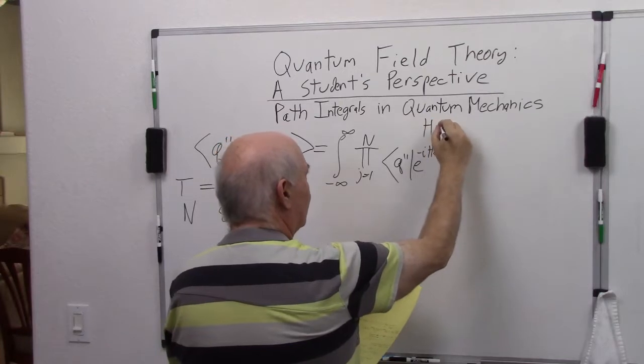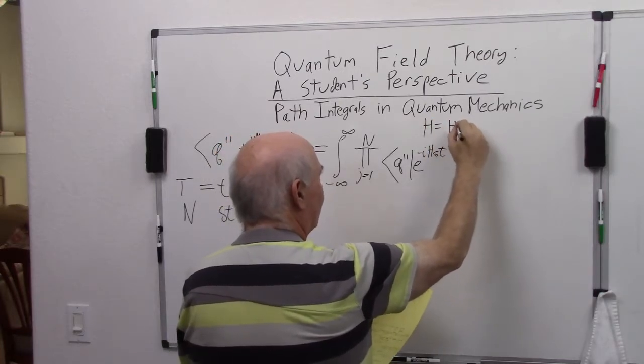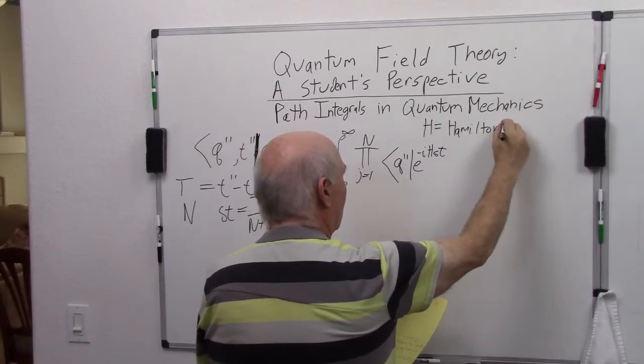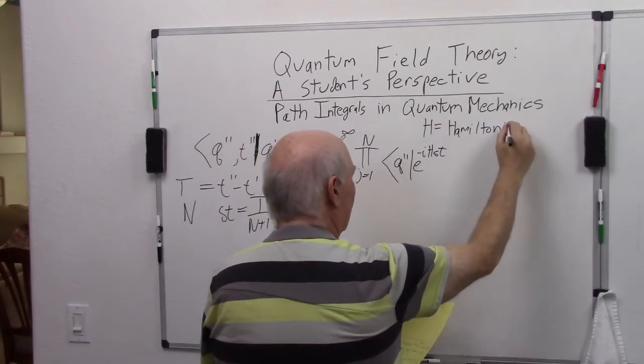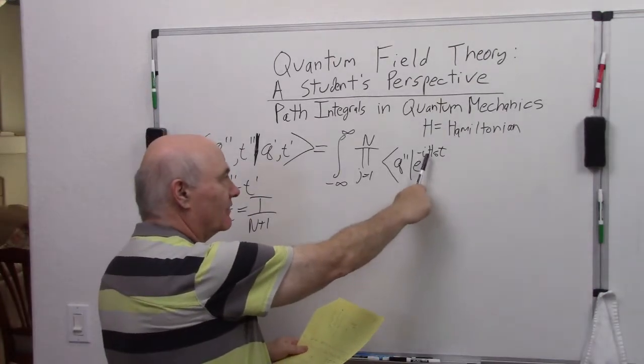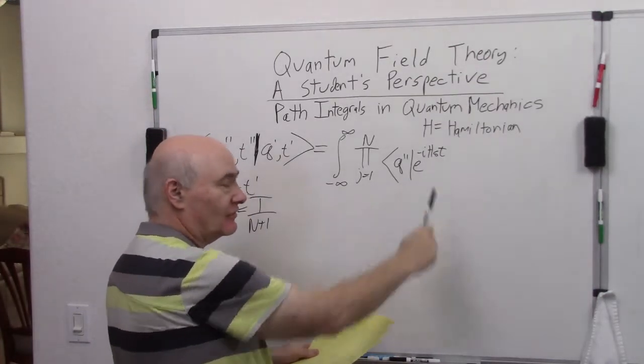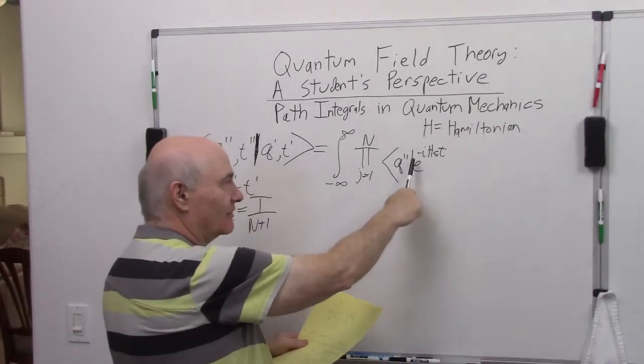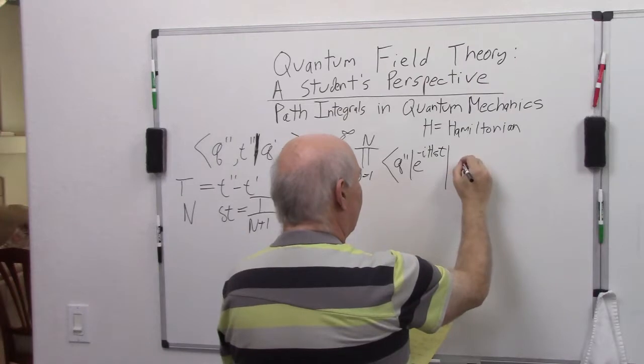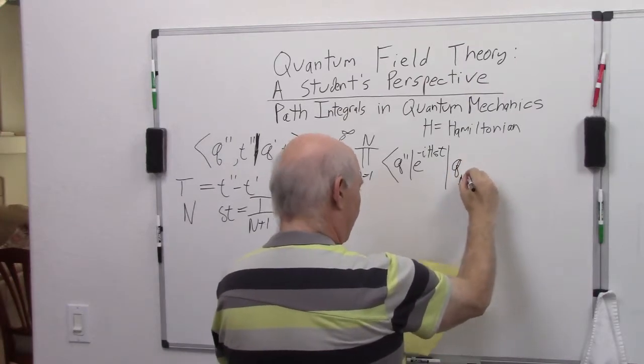h is the Hamiltonian operator. If you remember your quantum mechanics, e to the minus i h t develops time. We have delta t here, but this is the time development.